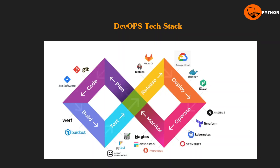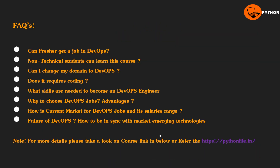Next, to operate and manage infrastructure, we can use Terraform, Ansible, Kubernetes, or OpenShift. OpenShift is built by Red Hat but the backend is Kubernetes. For monitoring, we have Prometheus, Elastic Stack, and Nagios. If you want open source only, Prometheus is better.